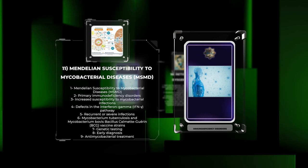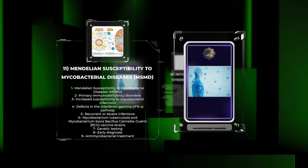Patients with MSMD suffer from recurrent or severe infections caused by mycobacteria, including Mycobacterium tuberculosis and Mycobacterium bovis bacillus Calmette-Guérin (BCG) vaccine strains. Genetic testing, early diagnosis, anti-mycobacterial treatment, and immunomodulatory agents form the basis of management for patients with MSMD.